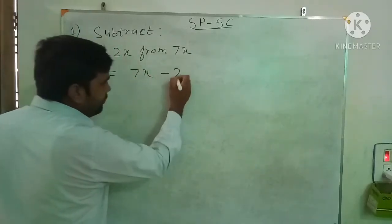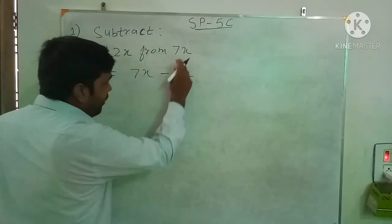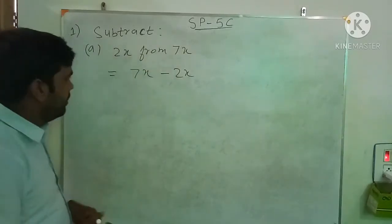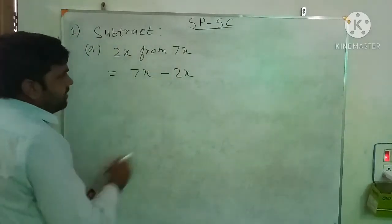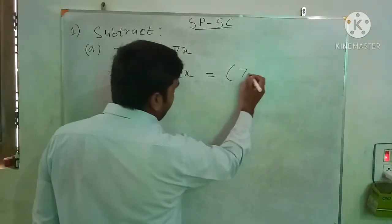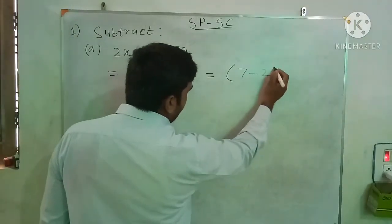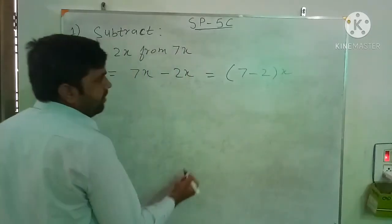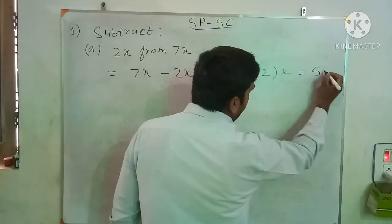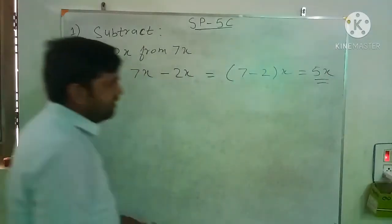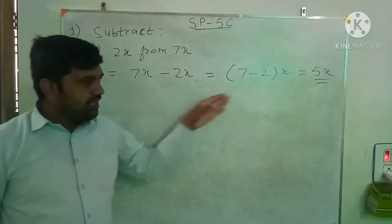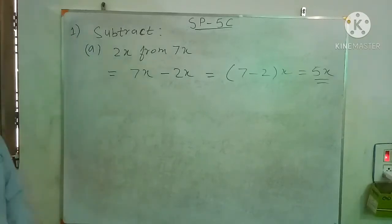Subtract 2x from 7x means 7x minus 2x. Take the numerical coefficients in the bracket: 7 minus 2, and multiply by the variable. So 7 minus 2 is 5, and 5 times x is 5x. So the answer is 5x. That is 7x minus 2x gives you 5x.